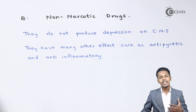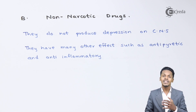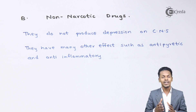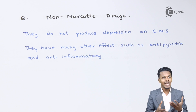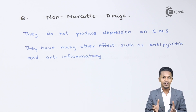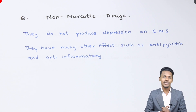Examples of non-narcotic drugs include aspirin and paracetamol. These are all pain killers but they do not affect the central nervous system as much compared to codeine, morphine, and heroin. These were the two classifications of analgesic that we have discussed.